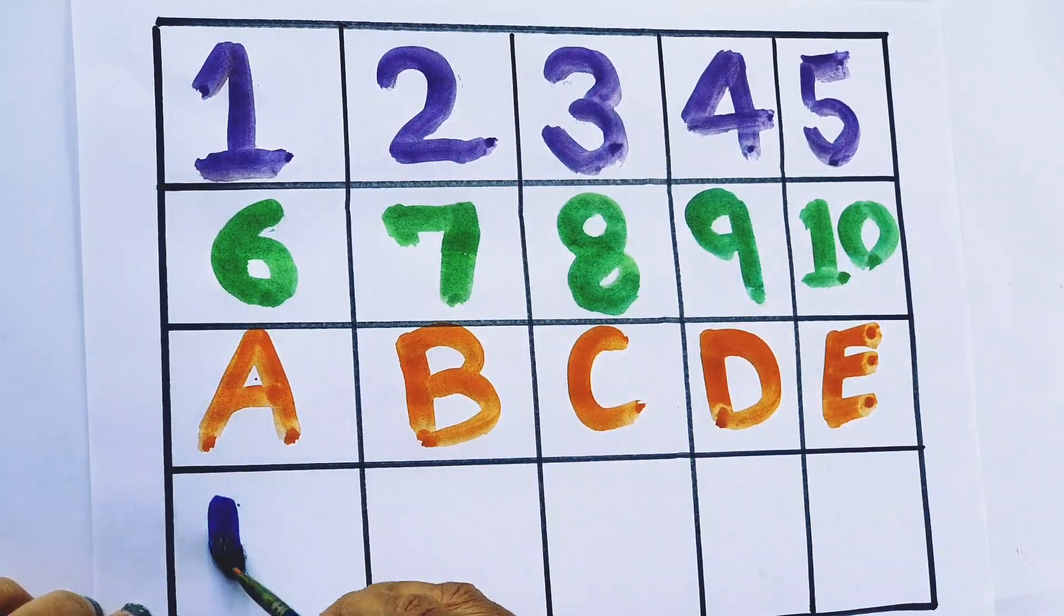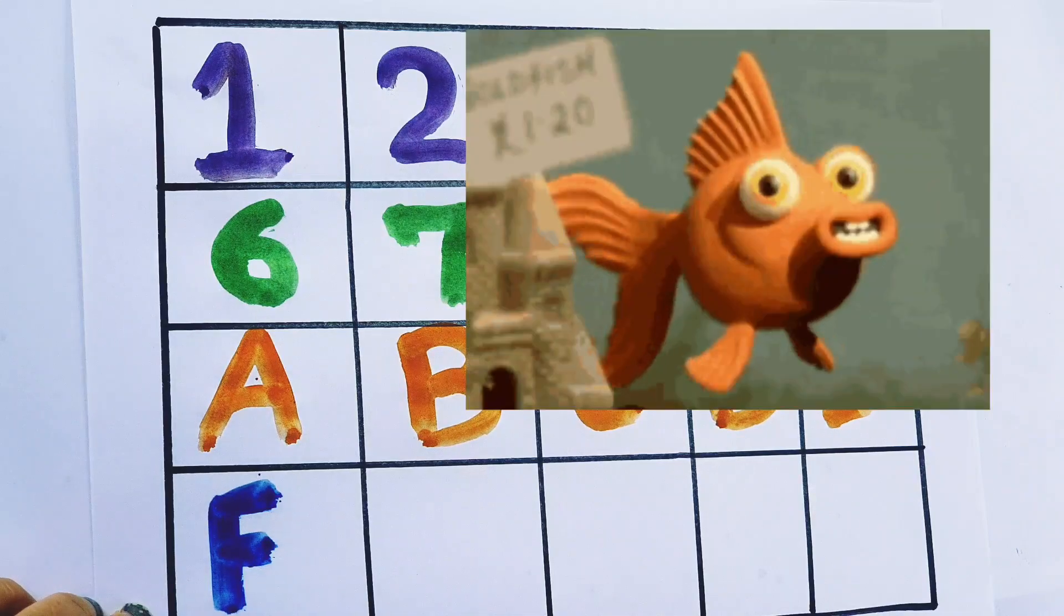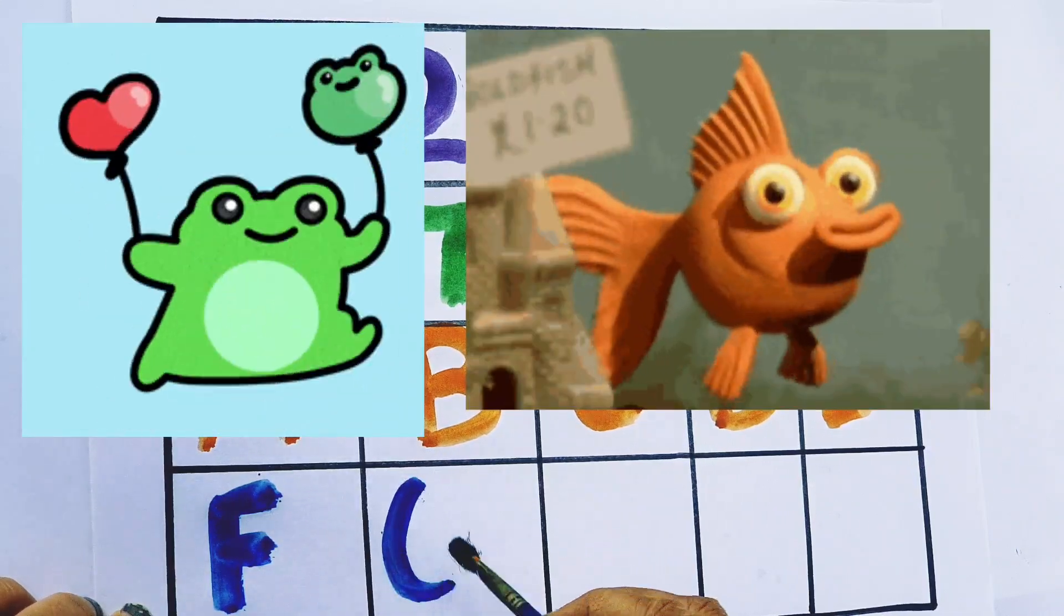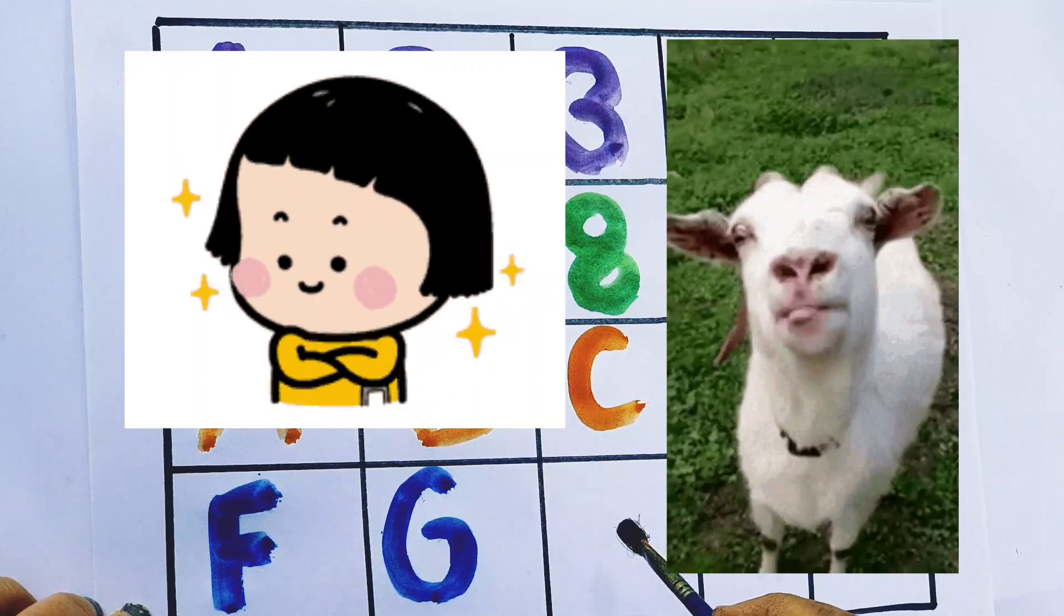Blue color. F, F for fish. F for frog. G, G for got. G for girl.